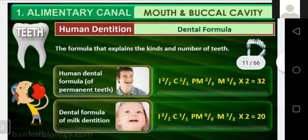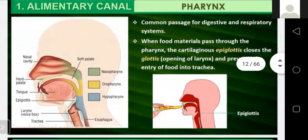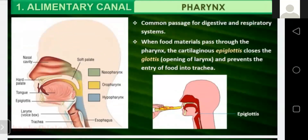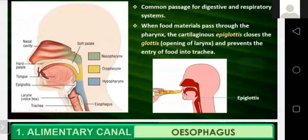The dental formula is 2-1-2-3, giving us 32 permanent teeth; babies have 20 milky teeth. The next structure is the pharynx. The pharynx is a common passage for both the digestive and respiratory systems — that is why you can also take air through the mouth. When food material passes through the pharynx, the cartilaginous epiglottis closes the glottis, which is the opening of the larynx, and prevents the entry of food into the trachea.